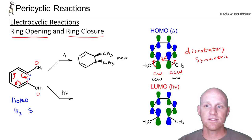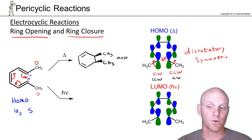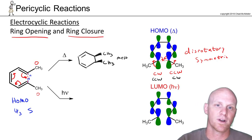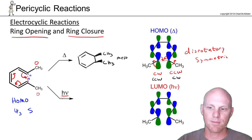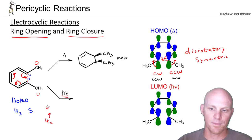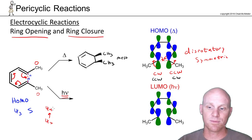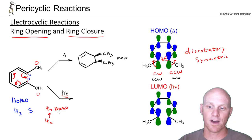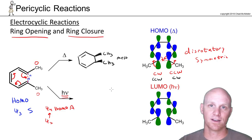These reactions can be both thermal and photochemical, the same way cycloadditions could. Under photochemical conditions, you're going to take electrons from psi 3 and promote them up to psi 4. Whereas psi 3 used to be the HOMO, it's not anymore — now psi 4 is going to be the highest occupied molecular orbital, and instead of being symmetric, it's antisymmetric. And that's going to change some things.